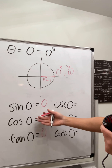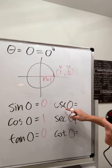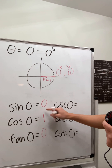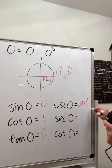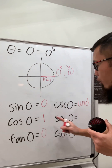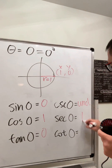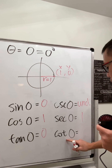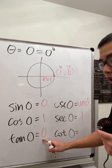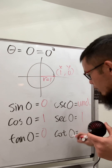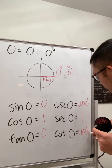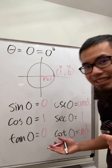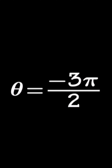The reciprocal functions: cosecant is 1 over 0, which is undefined. Secant is 1 over 1, which is 1. Cotangent is 1 over 0, which is also undefined. And that's it — we're done with 0°.